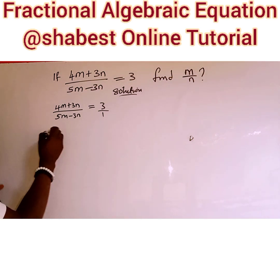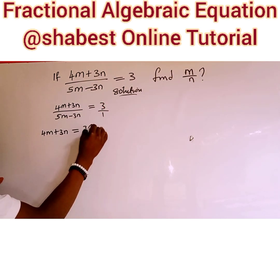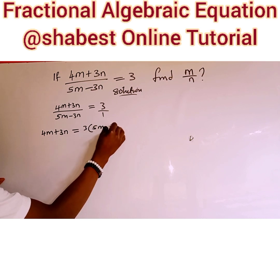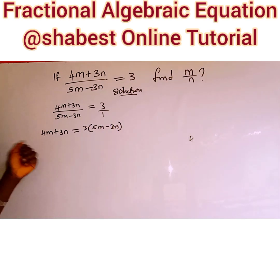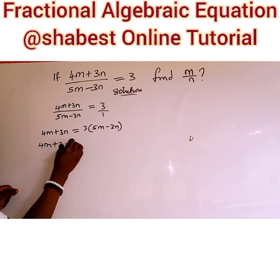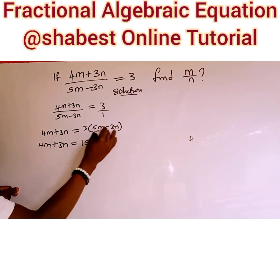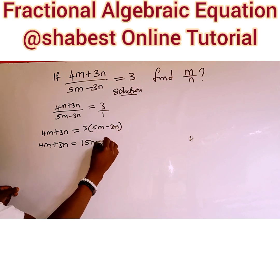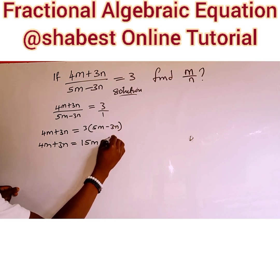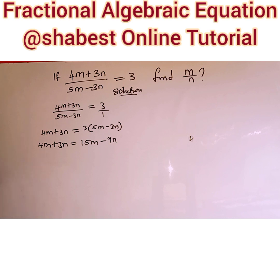1 multiplied by the whole of this — and remember, 1 multiplied by any number is still that number — so I'll have 4m plus 3n, which is equal to 3 multiplied by 5m minus 3n. Opening this bracket: 4m plus 3n equals 3 multiplied by 5m, which gives 15m, then 3 multiplied by minus 3n gives minus 9n.